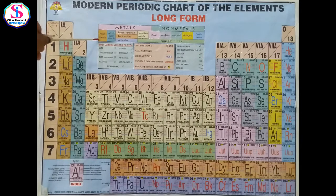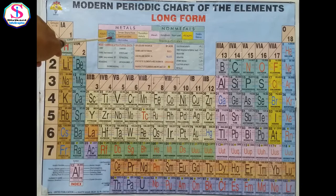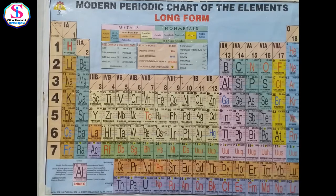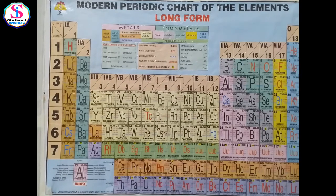Group 1 contains alkali metals — hydrogen is an exception. Group 2 contains alkaline earth metals. Group 17 (also called 7A) contains halogens: fluorine, chlorine, bromine, iodine, and astatine. Group 18 contains noble gases or inert gases — helium, neon, argon, krypton, xenon, and radon — with completely filled outermost shells. They do not take part in chemical reactions.